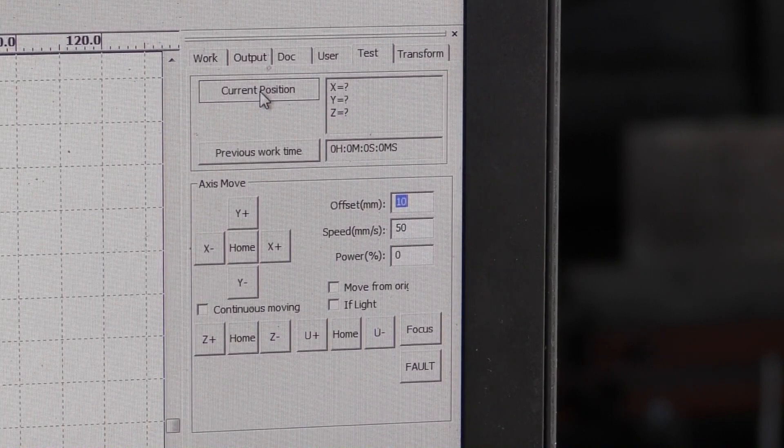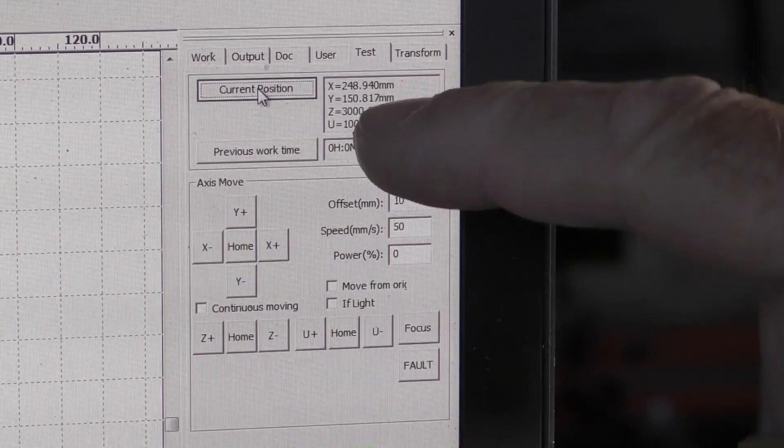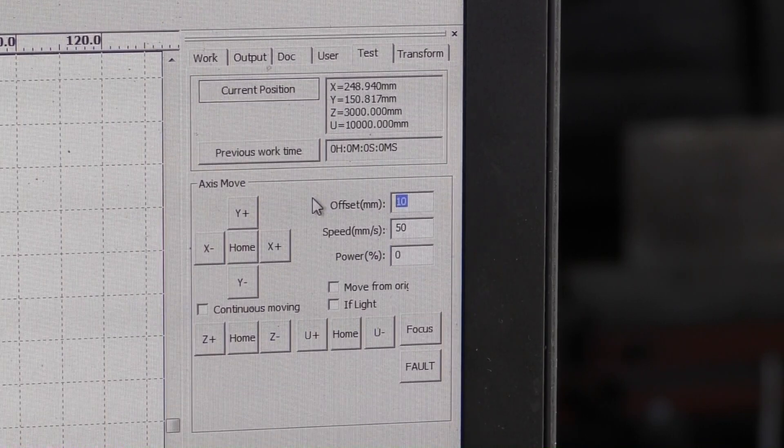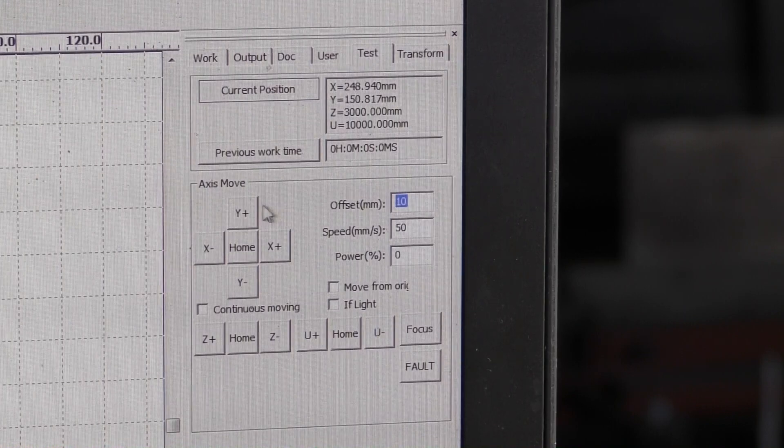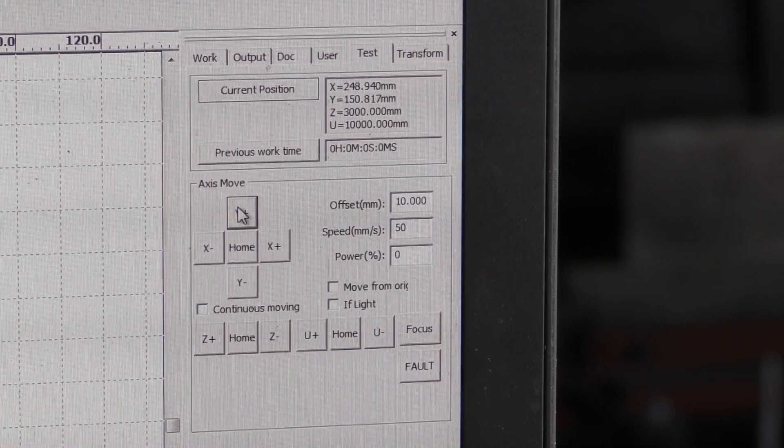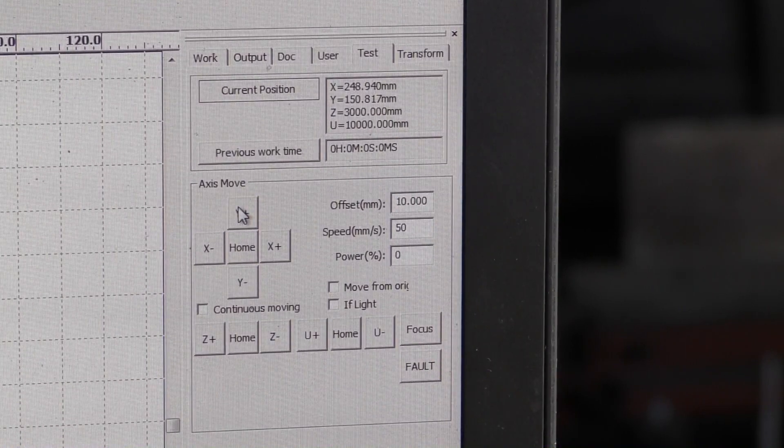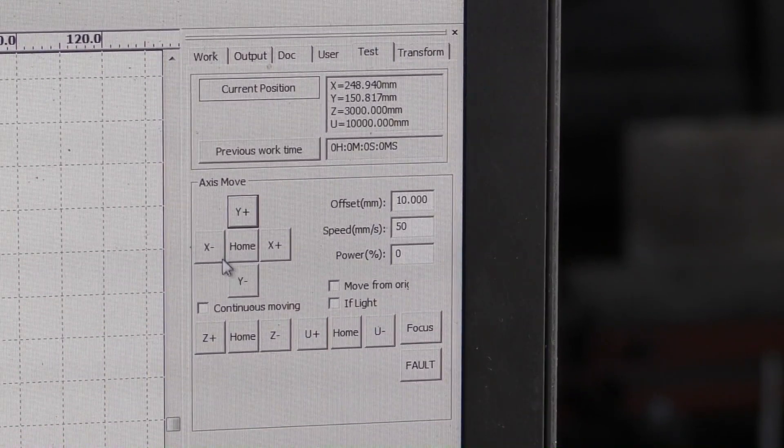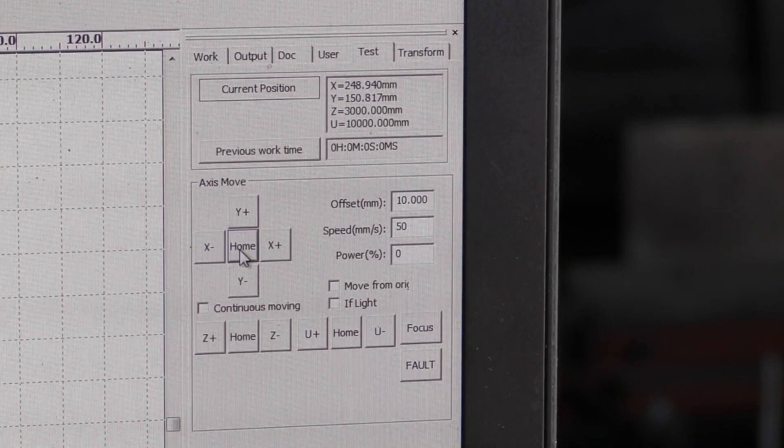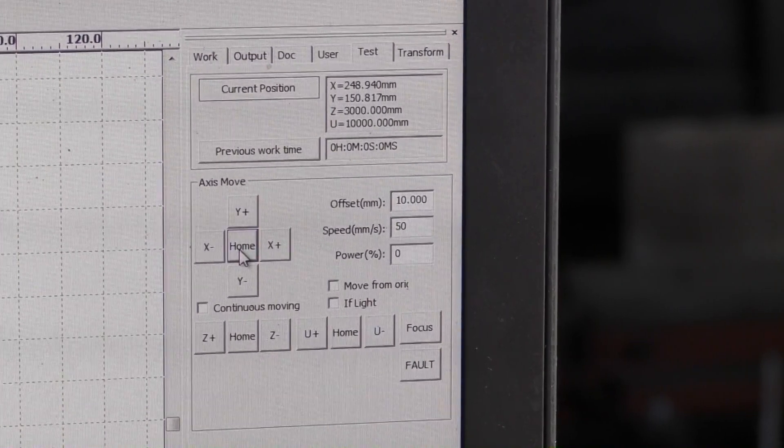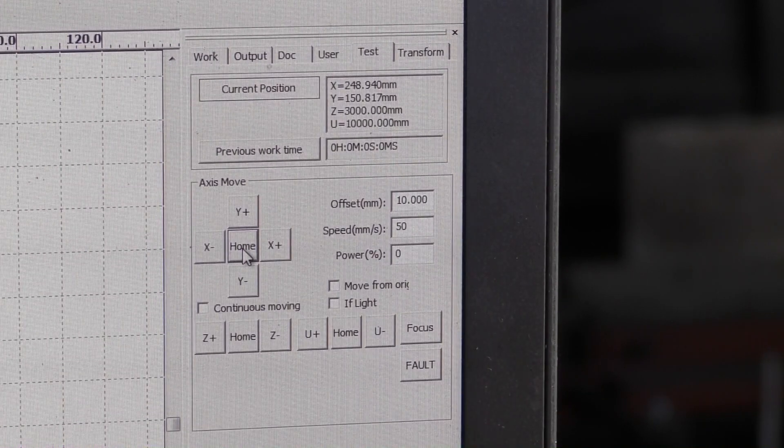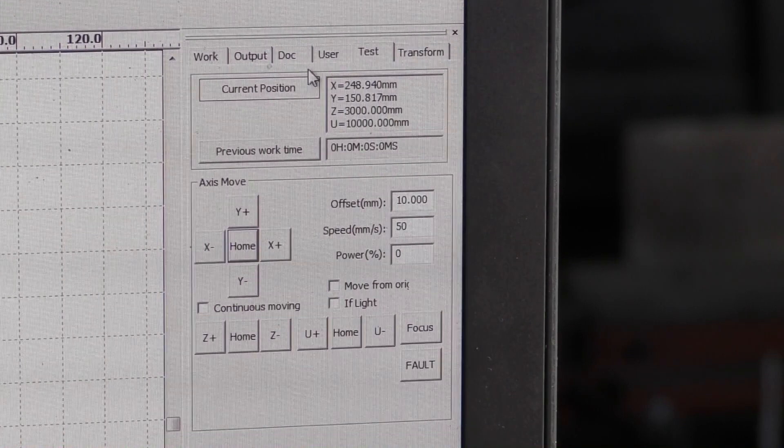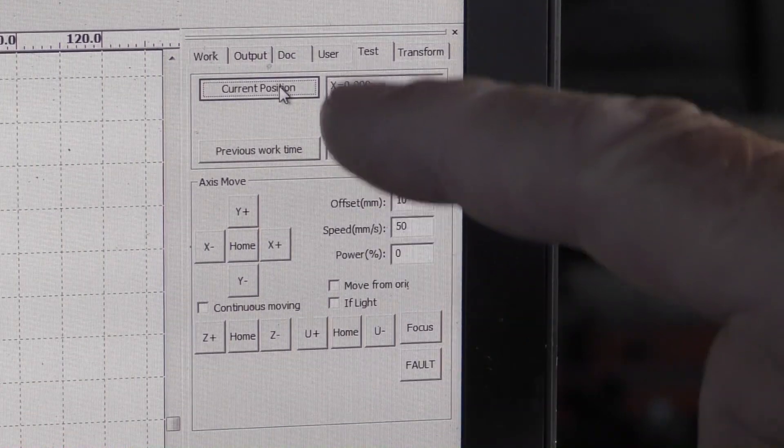So provided you have your machine connected via the USB, for example here I can say current position and it will tell me the current position of my head. Here I've got an offset millimeters. So I can in fact set that to, well I've got it set to 10 millimeters at the moment, which means when I press Y plus the machine moves by 10 millimeters in Y plus. And similarly in X. Now I can also send it to the home position, which basically is a reset, which is now done. And it stays there. And if I ask for the current position, it tells me it's X and Y zero.